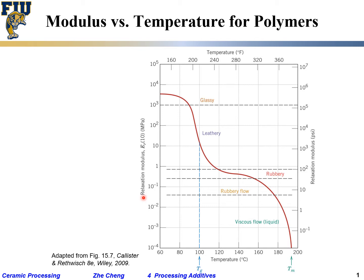What we see is this type of shape. Generally, the lower the temperature, the higher the modulus. The higher the temperature, the lower the modulus. For most materials, the higher the temperature, the softer it becomes.